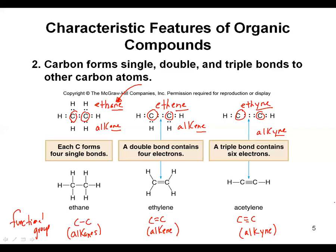One thing about organic chemistry is there are a lot of different names for the same compound. There are official names sometimes referred to as the IUPAC name — the International Union of Pure and Applied Chemistry — which determines how you name everything. There are also historical names and common names for the same compound. It's not unheard of to see three different names for the exact same thing: sometimes a more official name, a common name, and a historical name.